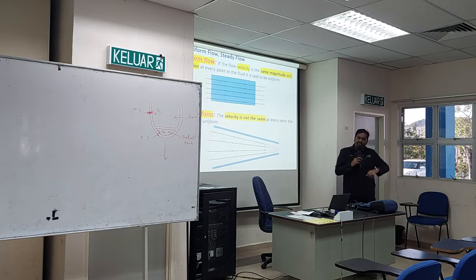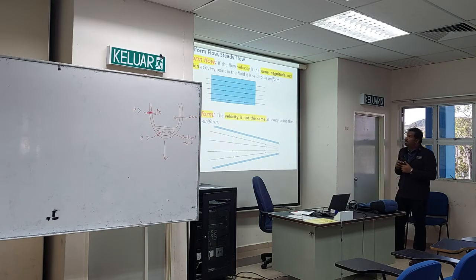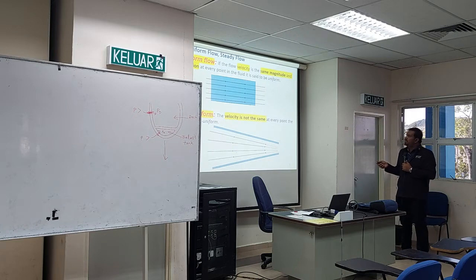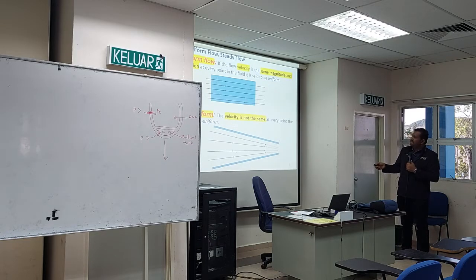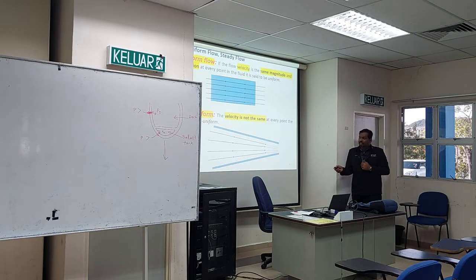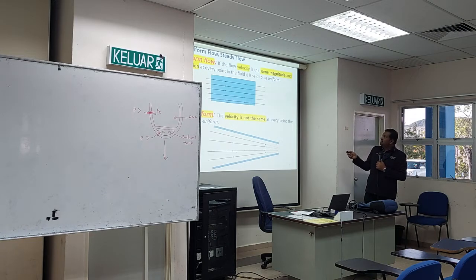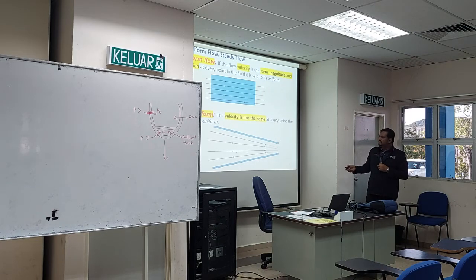The fifth term is uniform flow. If the flow velocity is the same magnitude and direction at every point in the fluid, it is uniform. For example, if you take a region and the velocity at one point is 10 m/s and at another point is also 10 m/s in the same direction, we consider that uniform flow. If not the same magnitude or direction, it is non-uniform.